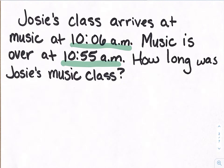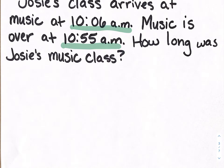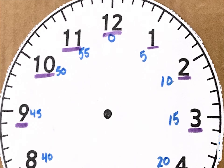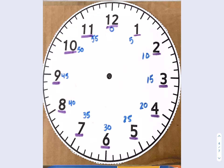So, one of the ways that you could have solved this was hopefully using your clock. I'm going to scroll down to my clock, and I could have counted. I could draw my minutes and hours. I could set my clock at 10:06, and I could count forward.